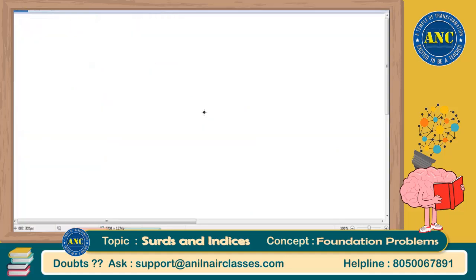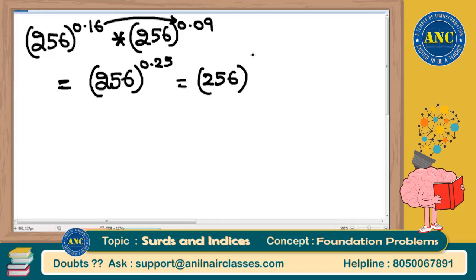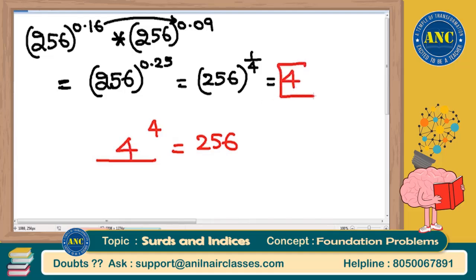Similarly, 256 to the power of 0.16 into 256 to the power of 0.09. Same base, so add the powers: 0.16 + 0.09 = 0.25. Now 0.25 = 25% = 1 by 4, so we need the fourth root of 256. Since 4 power 4 = 256, the fourth root of 256 is 4. Answer is 4.